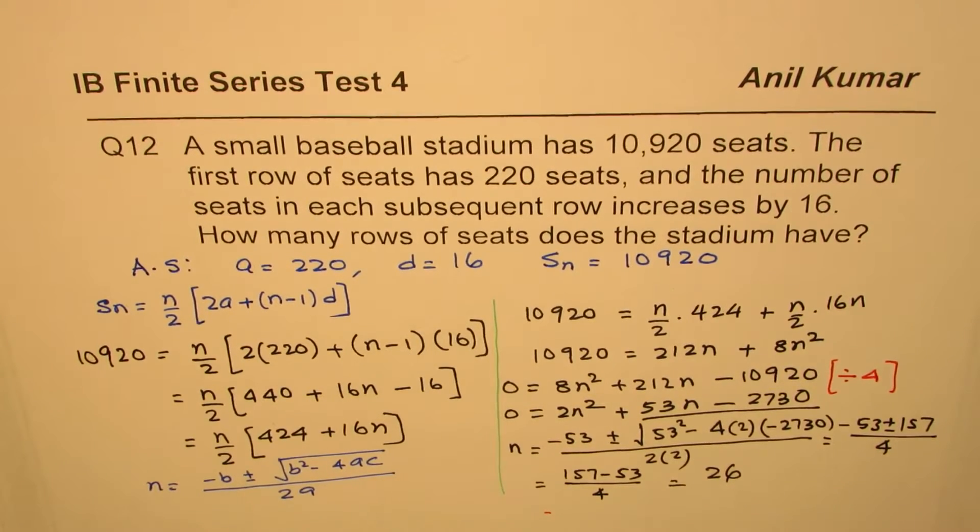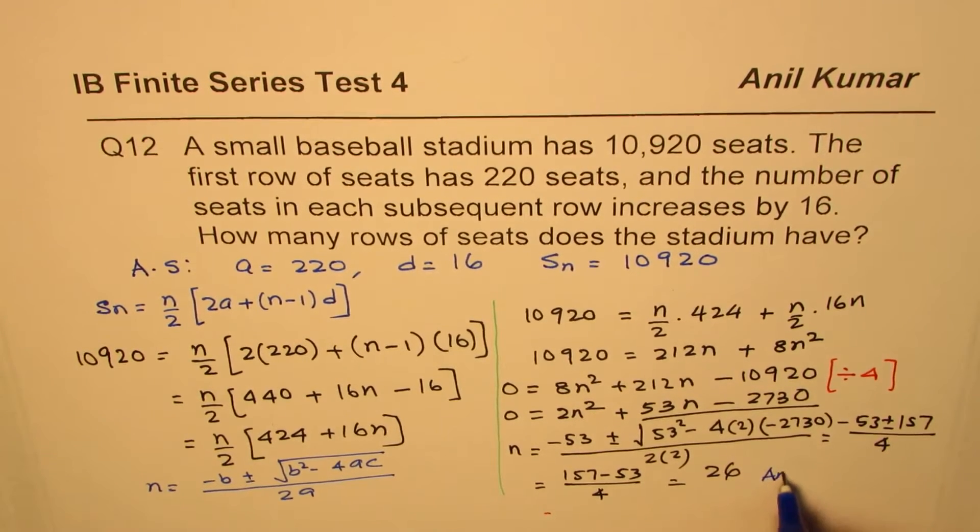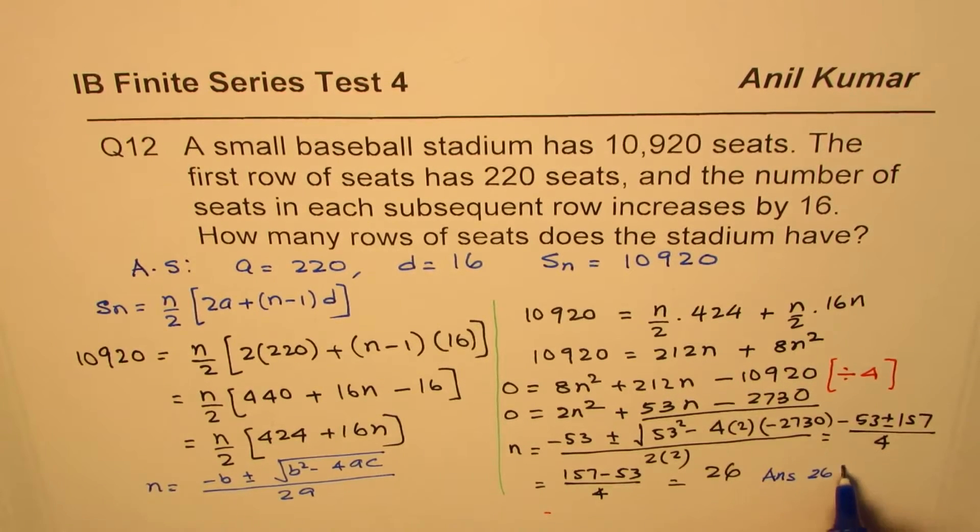So it says, how many rows of seats does the stadium have? So our answer is 26 rows. So we can write answer as 26 rows.